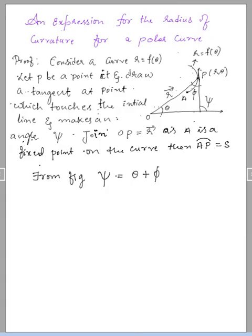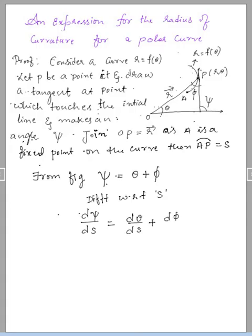From the figure, I can define that the exterior angle is equal to the sum of the interior angles, that is psi equals theta plus phi. Now, I am going to differentiate this equation with respect to s. We are going to get d psi by d s, which is equal to d theta by d s plus d phi by d s.